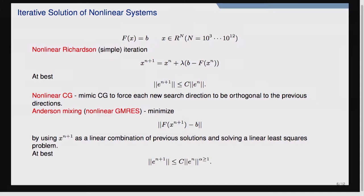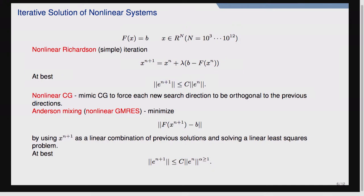If you're lucky, with Anderson mixing you can get superlinear convergence: the error at the next iteration is some constant times the previous error to a power greater than one — say 1.1, 1.2, or 1.5 — which is much faster than linear convergence for the same constant C.